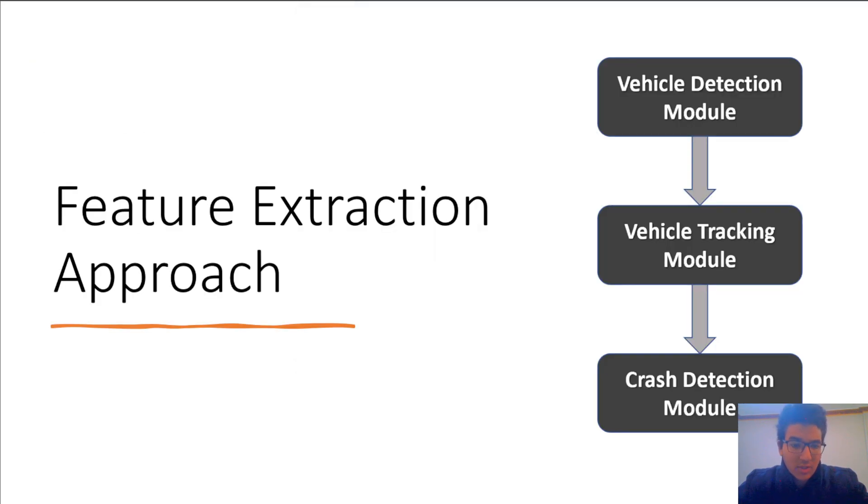So we went for the feature extraction approach. And many research papers suggested a framework for accident detection, which start with the detection module, which detects vehicles in the frames, then goes to the tracking module to track these vehicles. And lastly, the crash detection module, which, for example, one prominent work have used a violent flow descriptor, which really had got true alarms, but huge false alarms that made the system unreliable. So we started working on how to decrease these false alarms until we found another algorithms to detect the crash, which we name it crash estimation module.